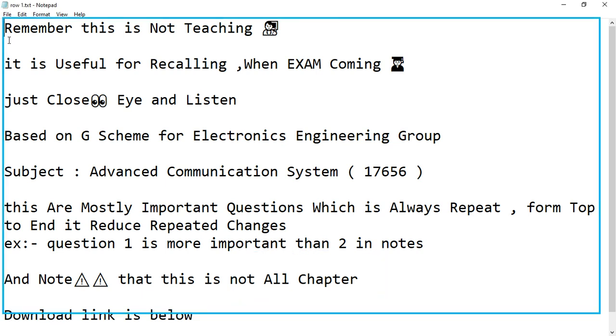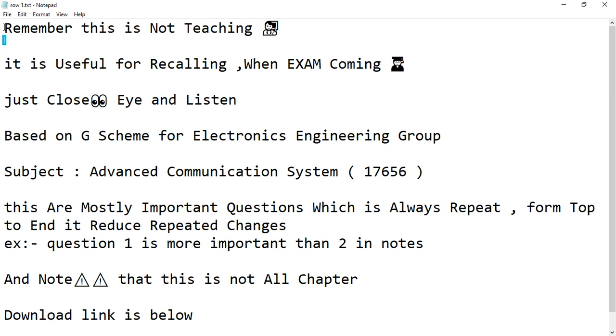Remember this is not teaching, it is useful for recalling when exam coming. Just close your eye and listen. Based on G-scheme for Electronics Engineering Group, Subject Advanced Communication System 17656. These are mostly important questions which is always repeat, form top to end. It reduce repeated changes. Question 1 is more important than 2 in notes. And note that this is not all chapter. Download link is below.